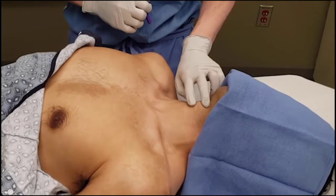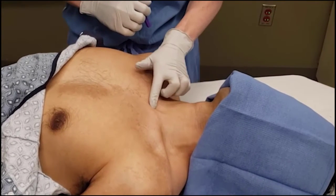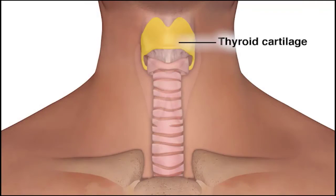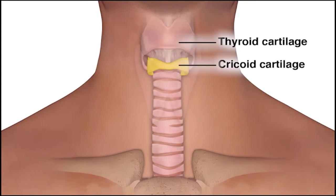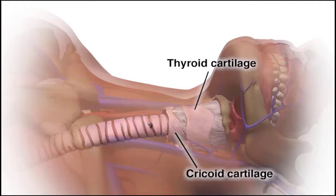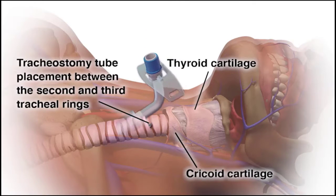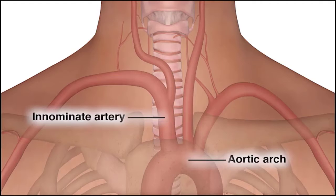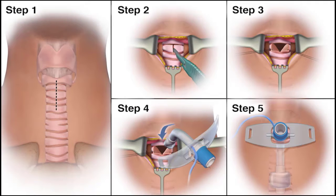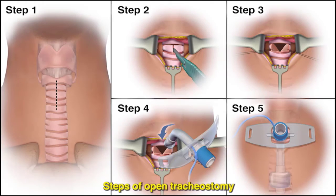Palpate the patient's neck to identify key anatomical landmarks, including the thyroid cartilage, the cricoid cartilage, and the sternal notch. The ideal location for placement of the tracheostomy tube is between the second and third tracheal rings. Make sure to check for a high-riding innominate artery that may overlie the area of the planned incision. An open tracheostomy should be performed instead of percutaneous tracheostomy if the patient has a high-riding innominate artery.